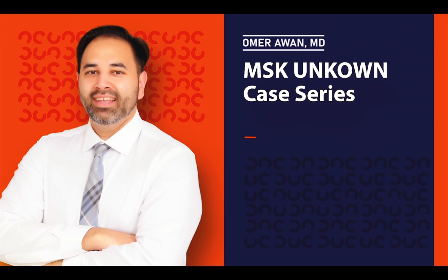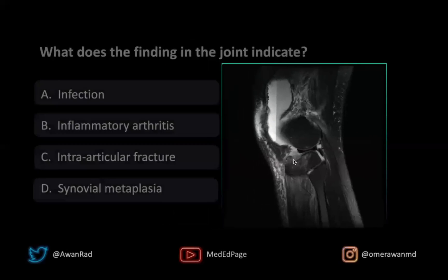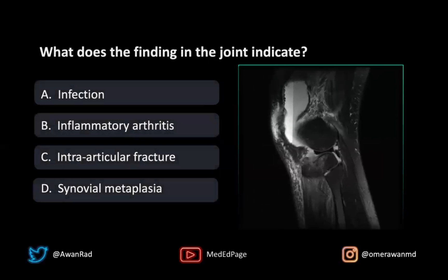Hello everyone and welcome back to the Med Ed page. This is MSK unknown case 95. Here we have a sagittal MRI examination of the knee showing some interesting findings in the joint space and the bone. The question is: what does the finding in the joint indicate — is this a case of infection, inflammatory arthritis, intraarticular fracture, or synovial metaplasia?